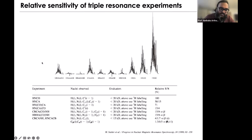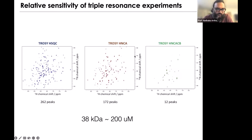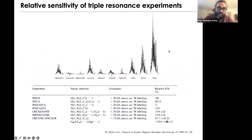Here is a pictorial representation of the relative intensity of different experiments — from a phosphatase of about 38 kilodaltons that could be concentrated to only about 200 micromolar. You can see the TROSY HSQC and two projections of a three-dimensional experiment. The HSQC has 262 peaks; the HNCA has 172 peaks; but the HNCACB has only about 12 peaks. So when we go to larger proteins, the experiments that give you additional dimensions to break degeneracy in the HNCA are no longer viable.